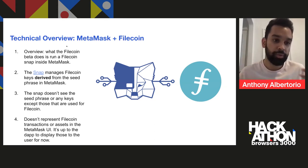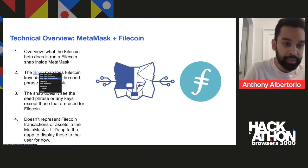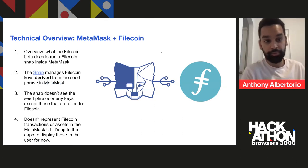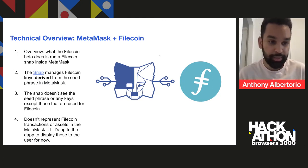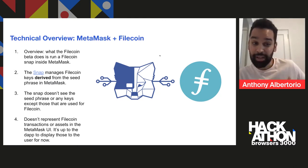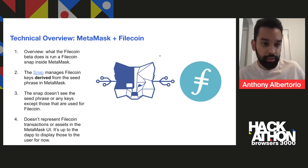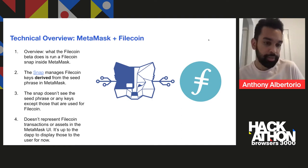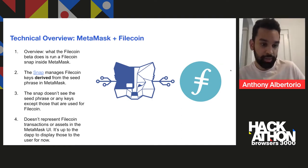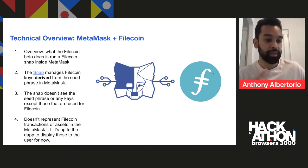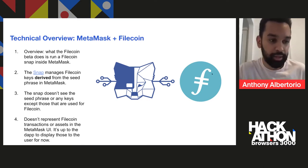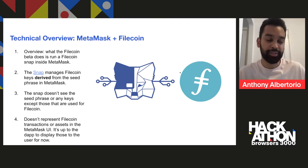Quick overview: the Filecoin beta runs in the Filecoin snap inside of MetaMask. The snap manages the Filecoin keys derived from the seed phrase in MetaMask. The snap doesn't see the seed phrase or any keys except for those used for Filecoin. At the moment it doesn't represent Filecoin transactions or assets in the UI — that's up to the adaptive display to show how those are used. But again, it's permissionless extensibility, so you can fork it and make it better.